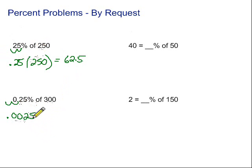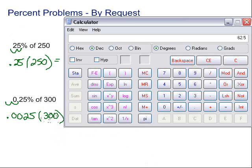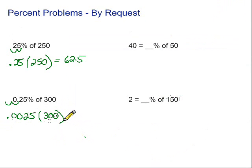remember, suggests multiplication. So we're going to multiply by 300. Again, we'll grab our handy-dandy calculator here. And we take .0025 times 300. And that gives us .75. So .25% of 300 is .75.